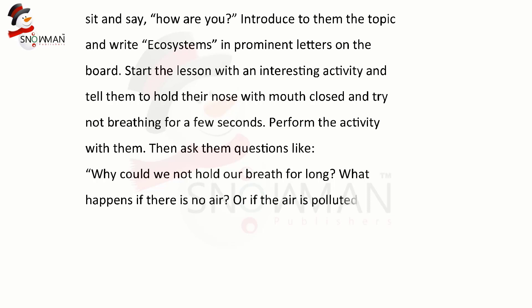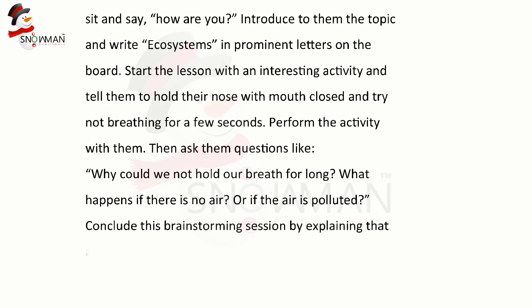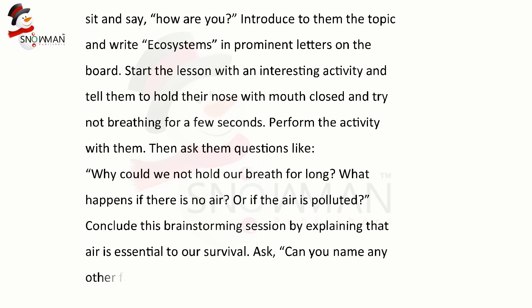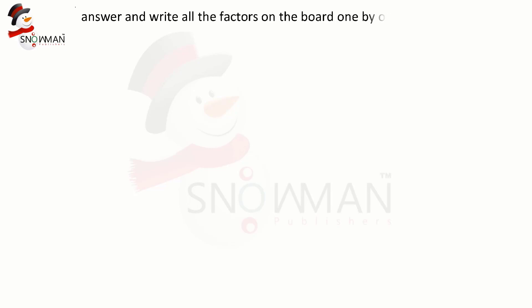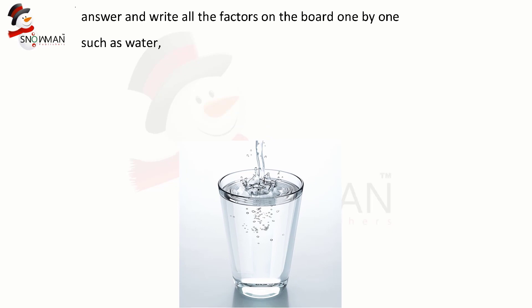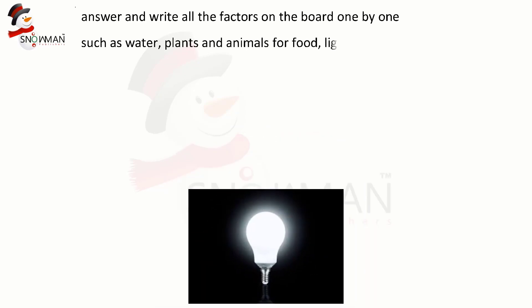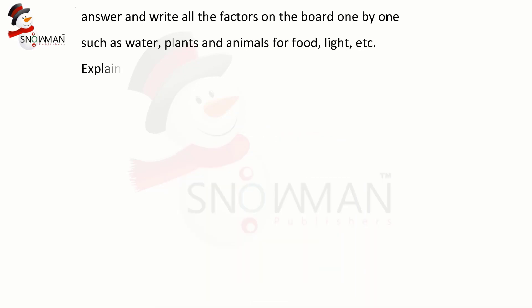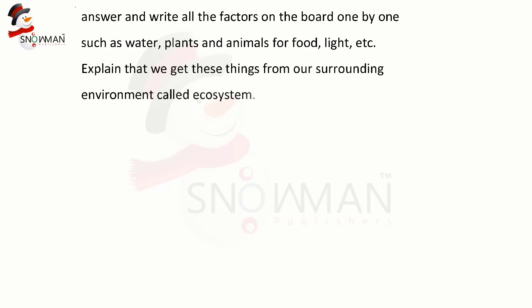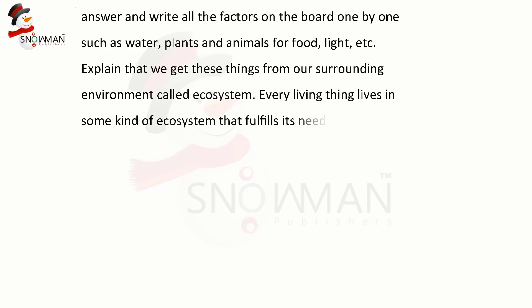Or if the air is polluted? Conclude this brainstorming session by explaining that air is essential to our survival. Ask: can you name any other factors we need to survive? Help the children answer and write all the factors on the board one by one, such as water, plants and animals for food, light, etc. Explain that we get these things from our surrounding environment, called an ecosystem. Every living thing lives in some kind of ecosystem that fulfills its needs.